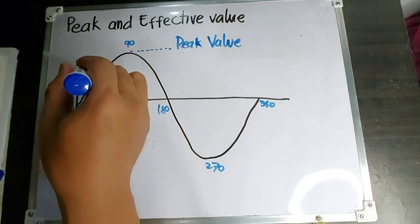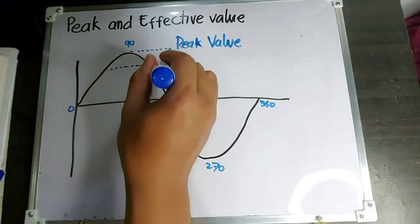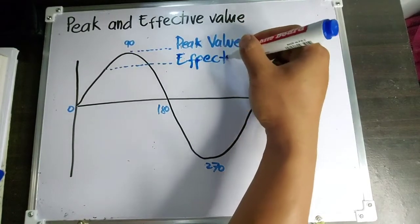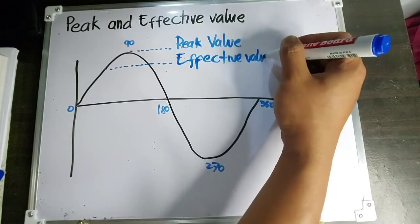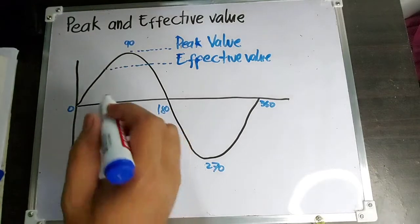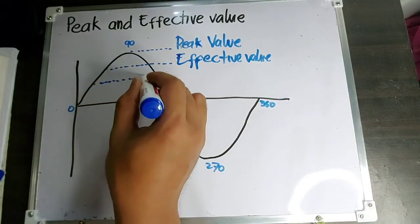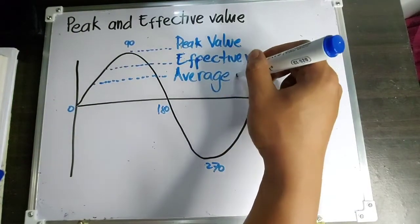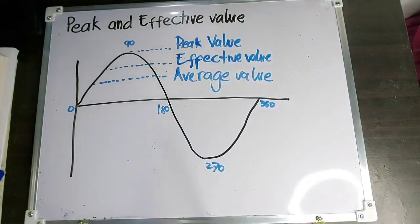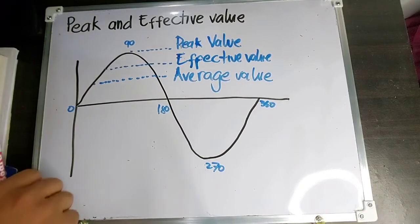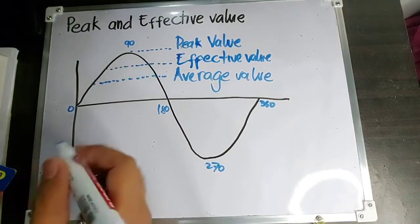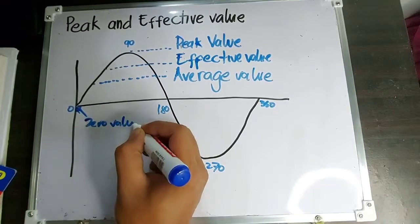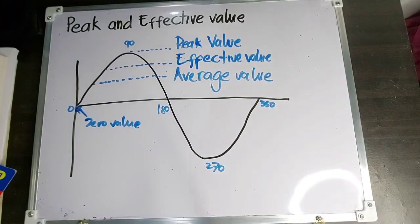Meron ding effective value — ito yung effective value. Then meron pang isa, average value. Halos nasa center siya. Average value. Ito yung zero value natin. Ano ba yung peak value, effective value, then average value?